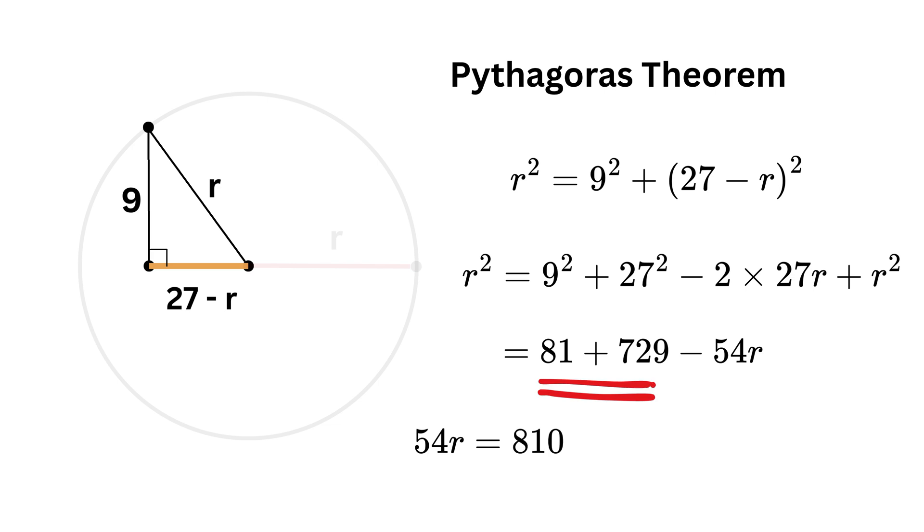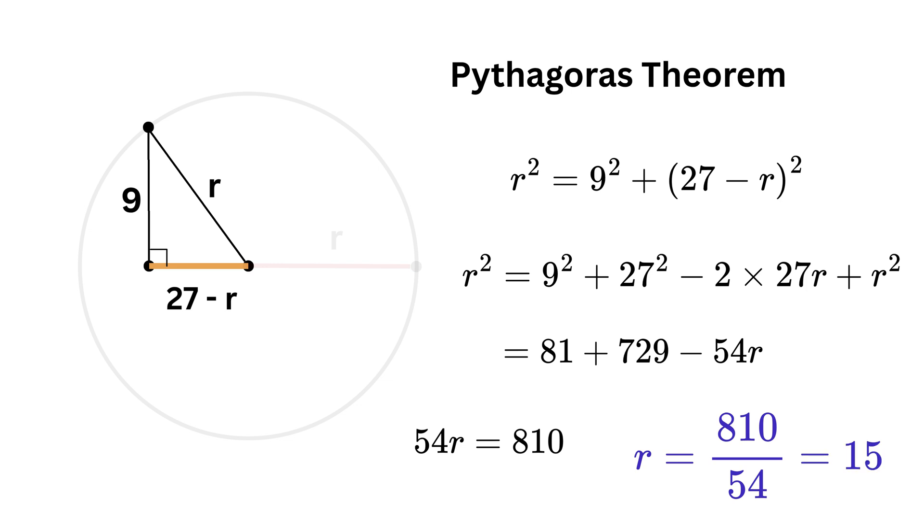So r equals 810 over 54, which is 15. And that's it! See, it was super duper easy.